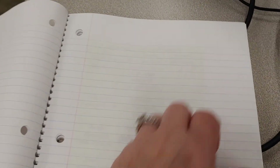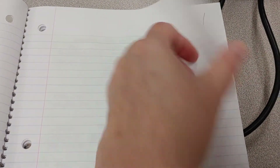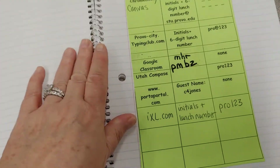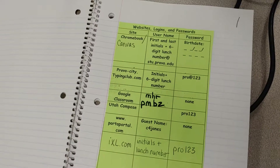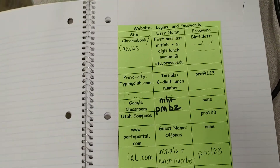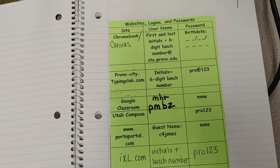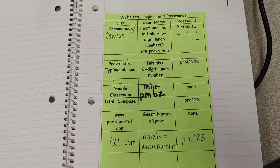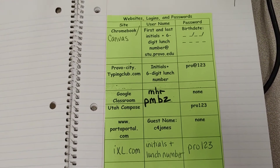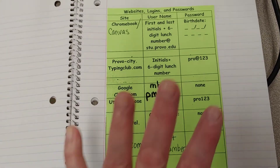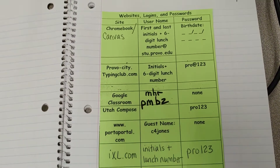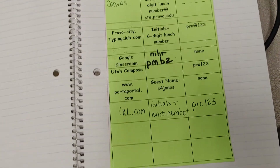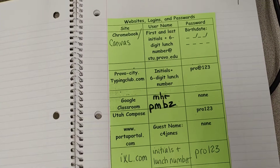Then they'll start numbering the pages in the corner, and their very first page is their logins — usernames and passwords. It's not pretty or fancy, but a lot of kids have a hard time remembering those things. If I give them a little card, they lose it. Having it in a big notebook really helps them find it when they need it, and we have more space to add more things.